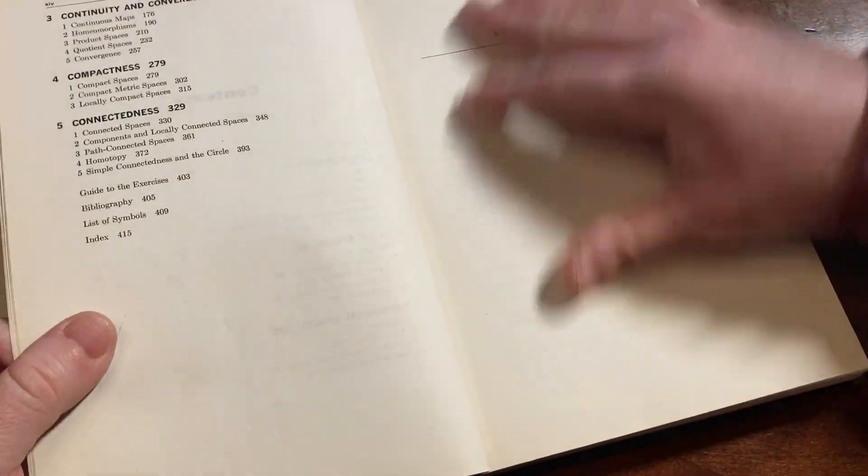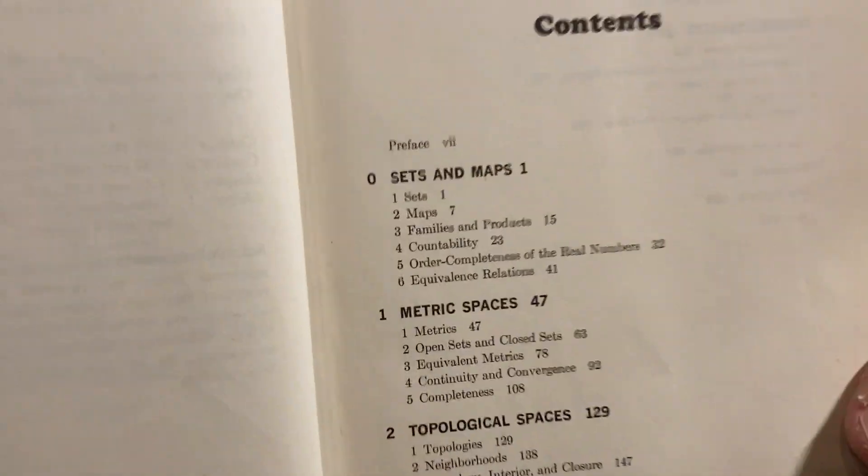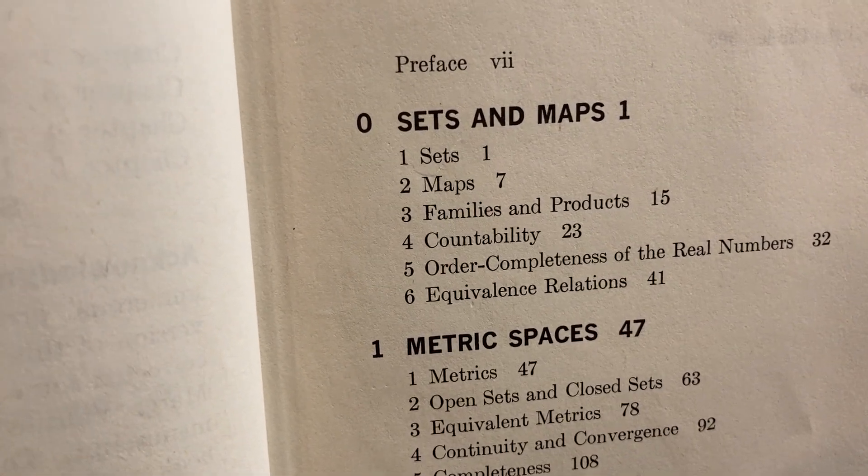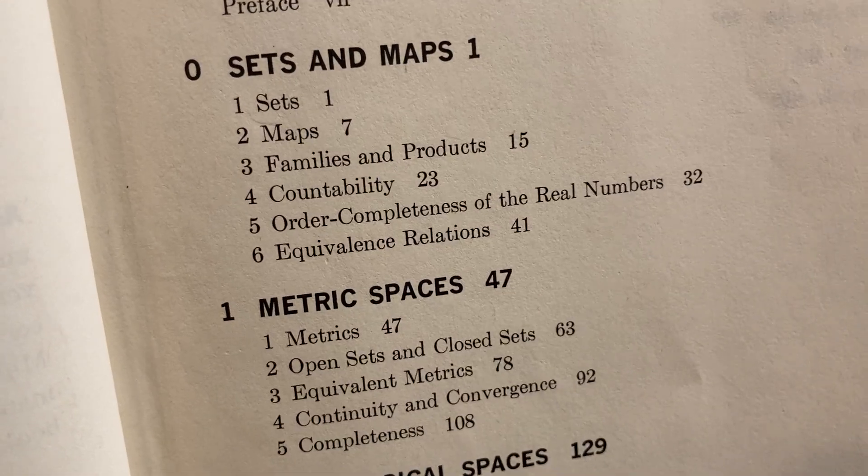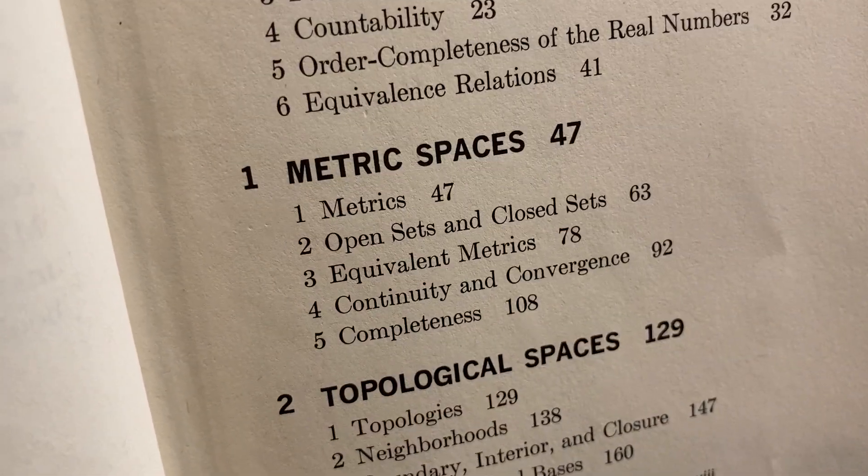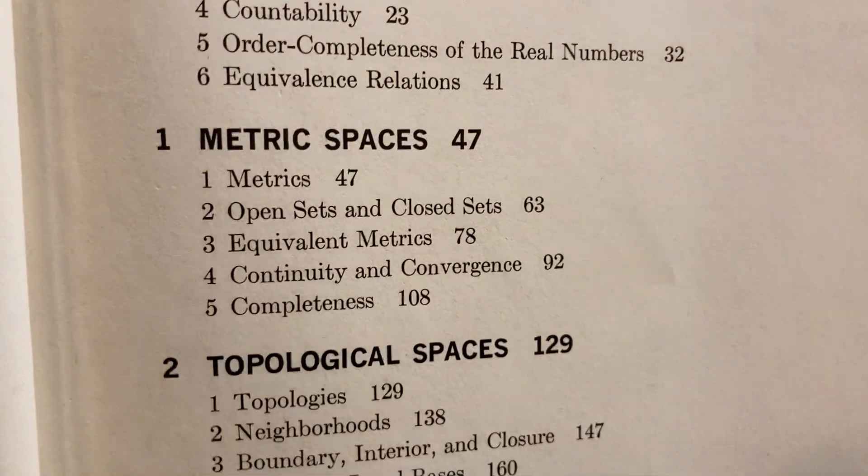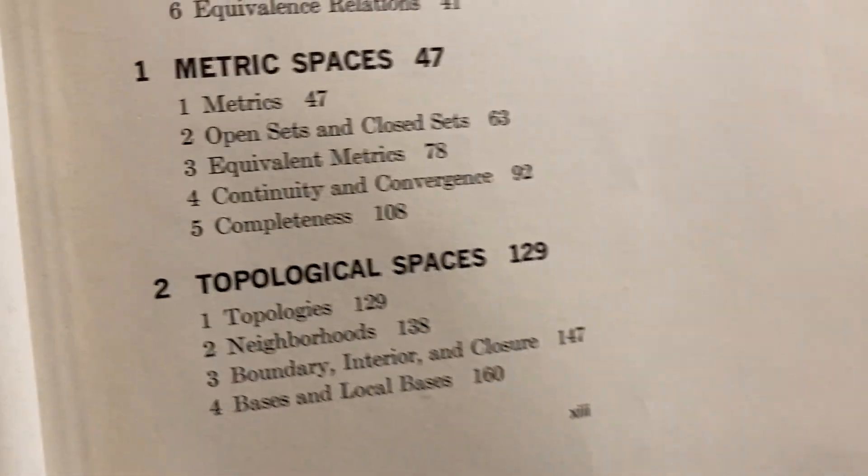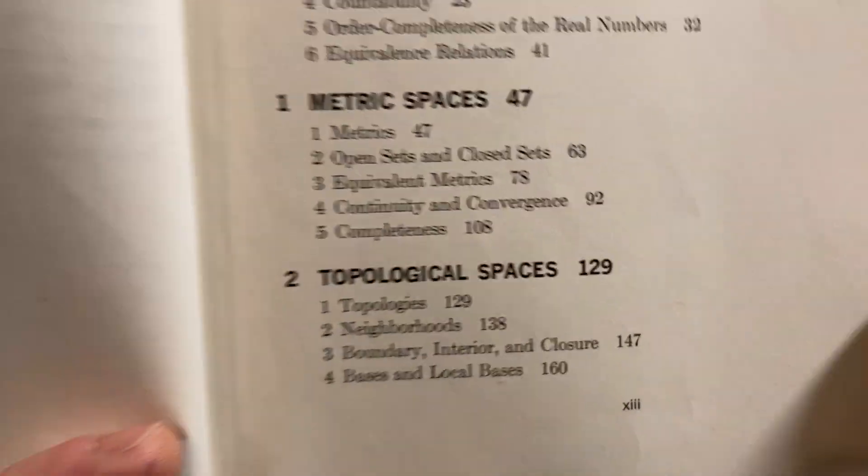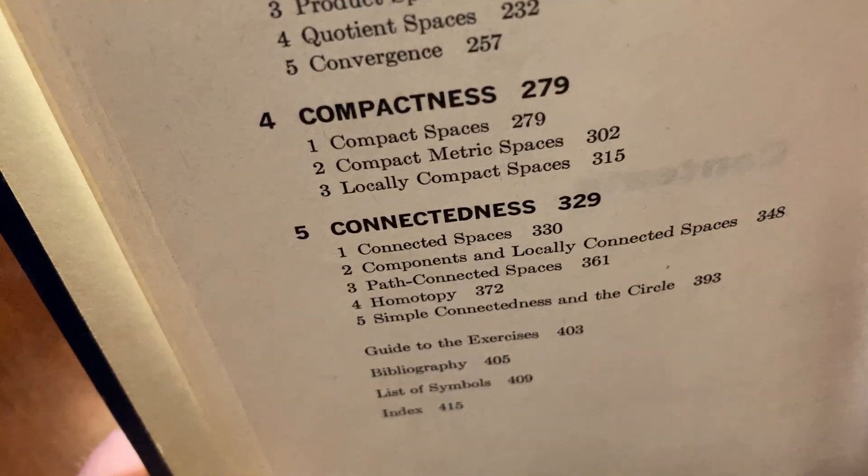Let's take a look and see what this book is about. Let's take a look at the contents. It starts with sets and maps: sets, maps, families and products, countability, order completeness of the real numbers, and equivalence relations. Things that you might need later on, perhaps. Metric spaces. That's a good place to start. If you've already had some analysis or advanced calculus, this is a very easy transition to jump into because a lot of the proofs are similar. It's just a similar flavor. Two is on topological spaces. Three is on continuity and convergence. Four is on compactness. And five is on connectedness.